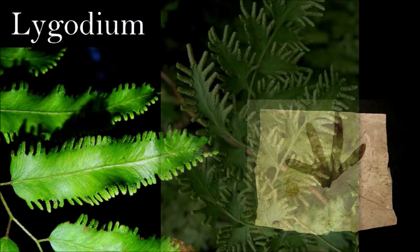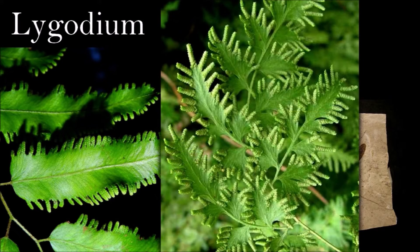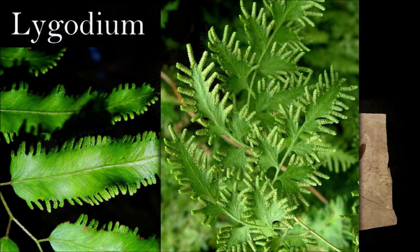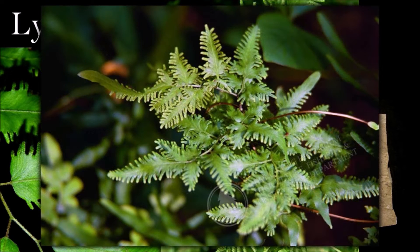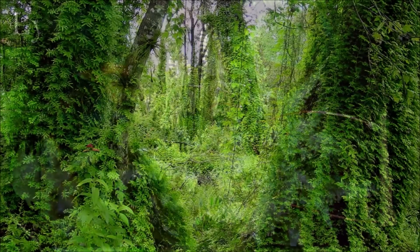The pinnules are either untoothed, toothed, or regularly lobed, and there is a thin vein running down the middle of each lobe which splits into secondary veins. Its fertile leaflets are also unusual in having very narrow leaf segments with their spore cases on cone-like extensions. It is the distinctive sterile and fertile foliage that permits the recognition of Lygodium in the fossil record.